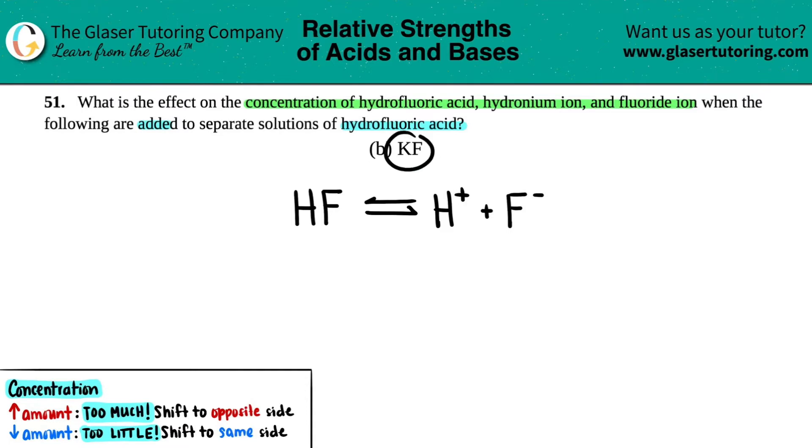And now basically we're adding KF. Now this is a salt, aka an ionic compound, because I see that I have a metal and a non-metal. And compounds in group one, they're always going to be soluble, so they're going to break down. So that's the first thing that I'm going to do.